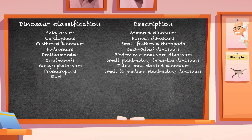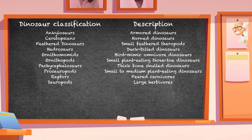Raptors: feared carnivores. Sauropods: large herbivores. Stegosaurs: spiked dinosaurs.